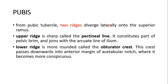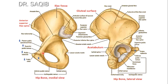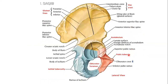From the pubic tubercle, two ridges diverge laterally onto the superior ramus. The upper ridge, sharp, is called the pectineal line — it constitutes part of the pelvic brim and joins with the arcuate line of the ilium, forming the iliopectineal line. The lower ridge, more rounded, is called the obturator crest. This crest passes downward into the anterior margin of the acetabular notch where it becomes more conspicuous.